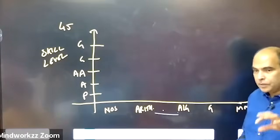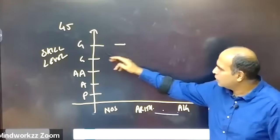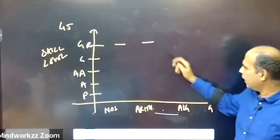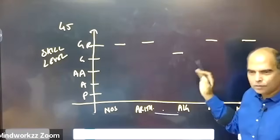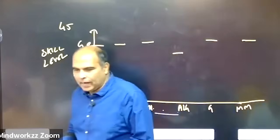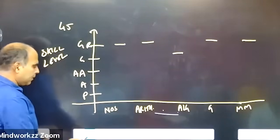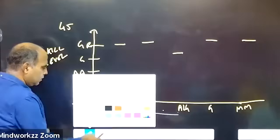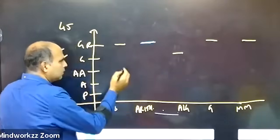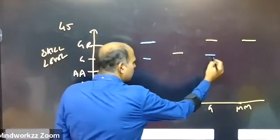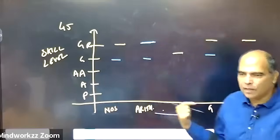The 100 percentiler who scores 60 marks has these values: great, great, good, great, great — four greats and one good. To get 99 percentile, you can pass by with one great, around three goods, and one above average. This format will get you a 99 percentile.